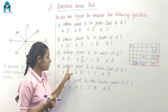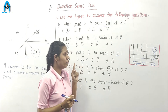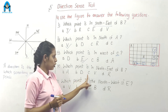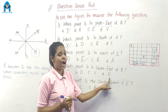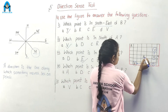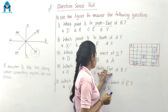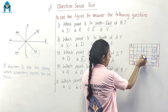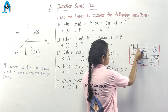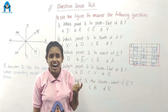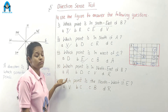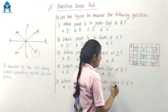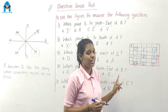Question 4: Which point is in the northeast of B? Let's check out. Where is B? Here. North is this side, east is this side, and northeast is here. The letter that comes in the northeast of B is R. Our correct option is option D — R.